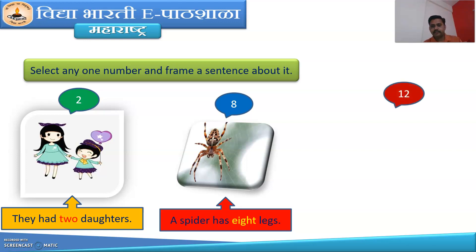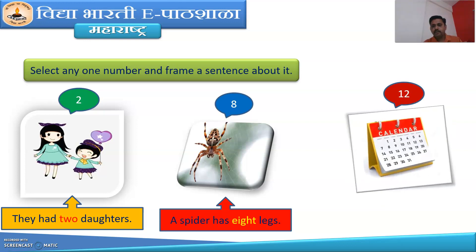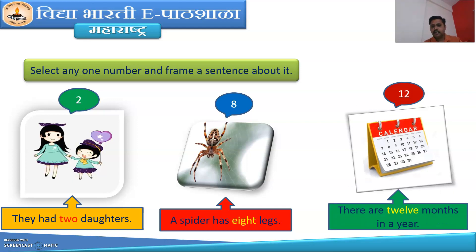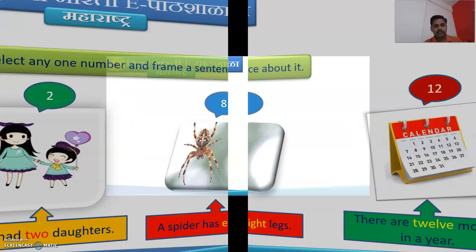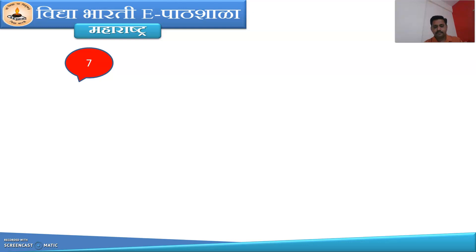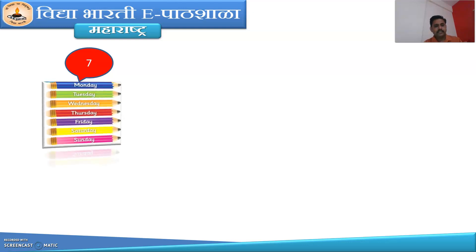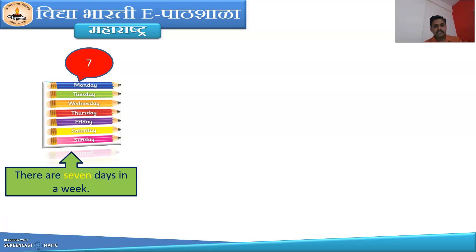Next number is 12. There is a picture of a calendar. How many months are there in a year? There are 12 months in a year. You have to frame a sentence like this using a number. Next number is 7. How many days are there in a week? There are 7 days in a week. This is the sentence.